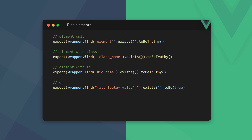Sometimes we'll need to test if an element exists in a component's template before we can test it. To do that, the Vue test utilities gives us the find and exists methods. Because the find method is essentially a wrapper for JavaScript's query selector, we can use the same syntax. In the code example, we're using Jest's toBeTruthy matcher, but we can also use toBe with true as the value.